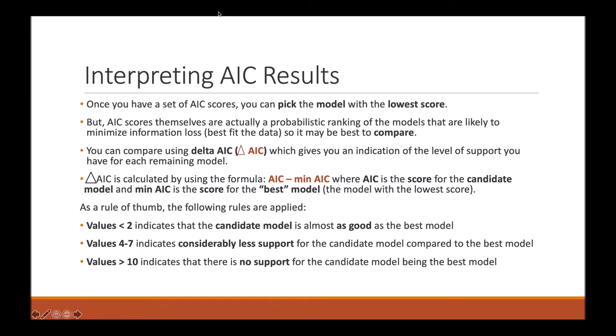As a rule of thumb, the following rules are applied: Delta AICC values less than 2 indicate that your candidate model is almost as good as the best model.